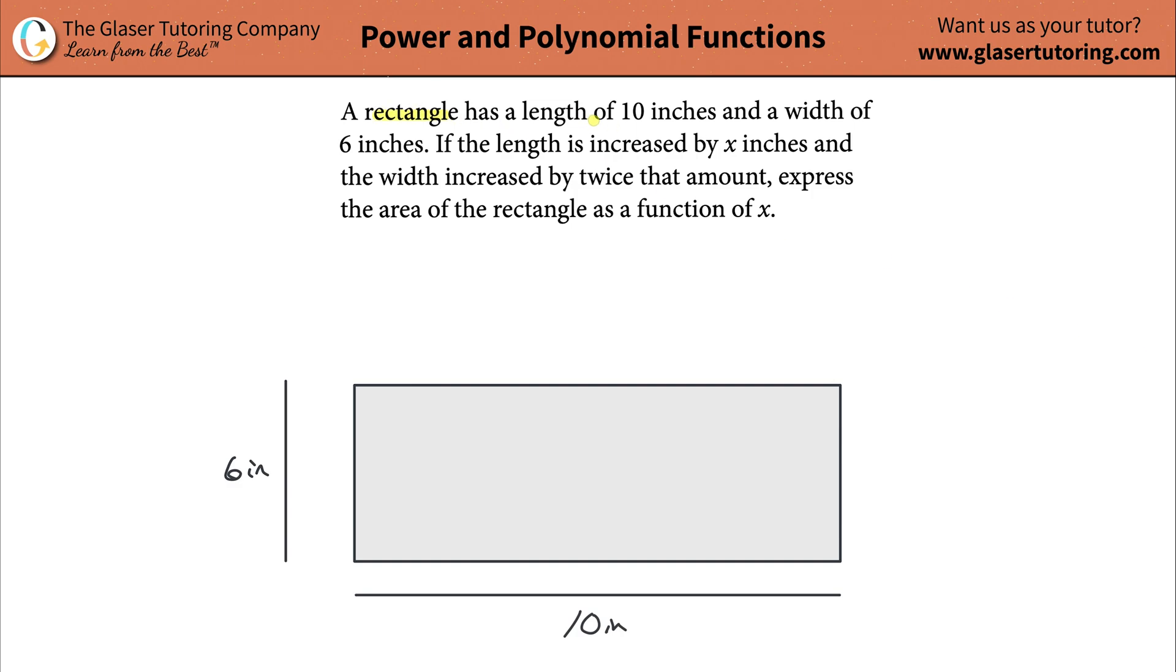A rectangle has a length of 10 inches and a width of 6 inches. If the length is increased by x inches and the width is increased by twice that amount, express the area of the rectangle as a function of x.